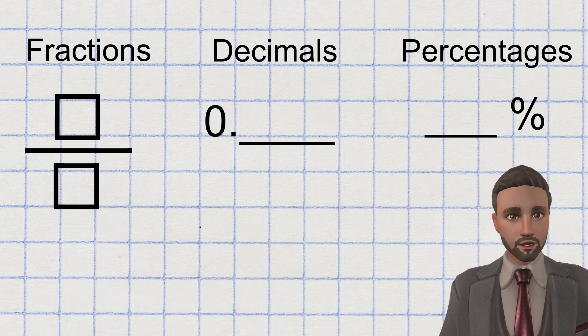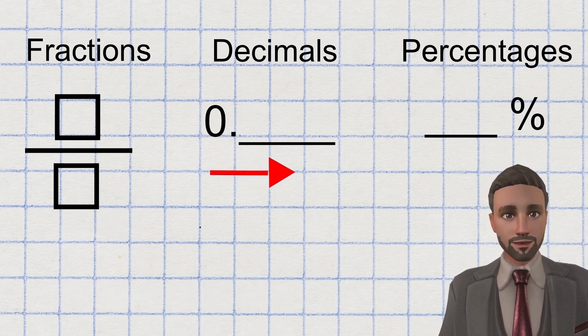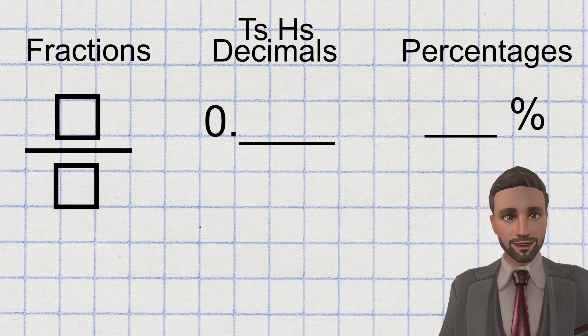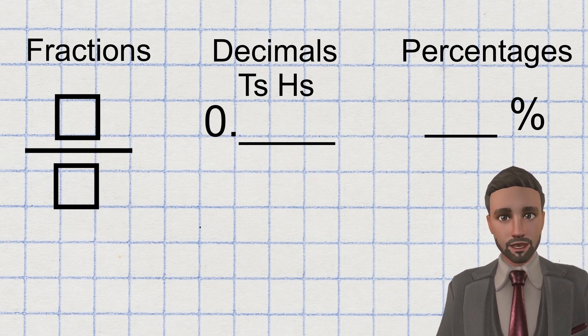When we use decimals, we use our place values to the right of the decimal place to represent how many tenths or hundredths our whole is split into.